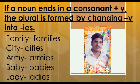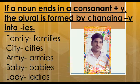If a noun ends in a consonant plus Y, the plural is formed by changing Y into IES. Examples: Family becomes families, City becomes cities, Army becomes armies, Baby becomes babies, Lady becomes ladies.